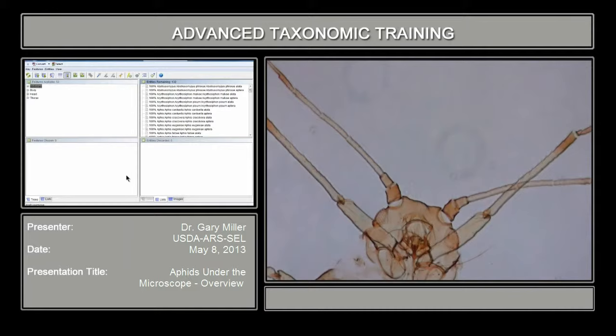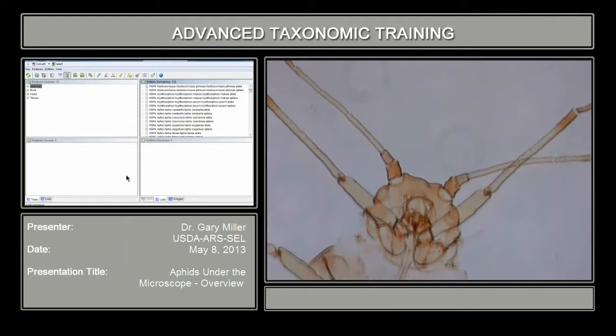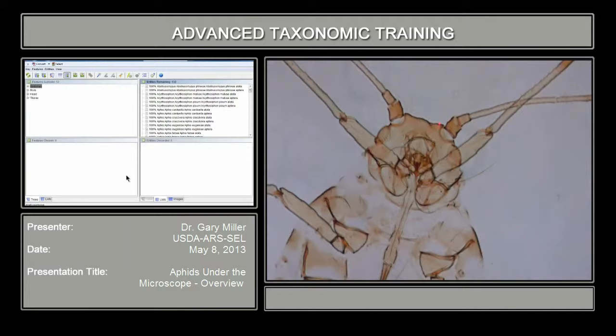Looking at the head, getting closer down towards the head region, there's a structure called the antennal tubercle — this area right in here. I'm starting out with a specimen that doesn't have much of an antennal tubercle, so when you look at this particular specimen in a key, it'll show whether the antennal tubercle is absent or present. We're going to look at a specimen of Myzus persicae in a little bit that has very well-developed antennal tubercles, but here the antennal tubercles are not much higher than the frons, which is this area right here in the center — a critical structure to evaluate.